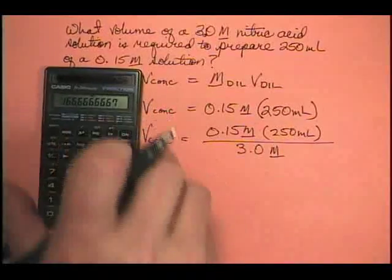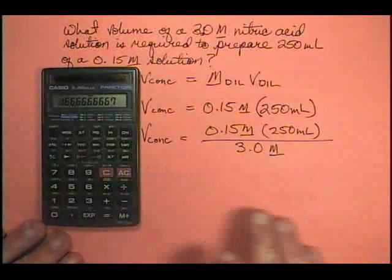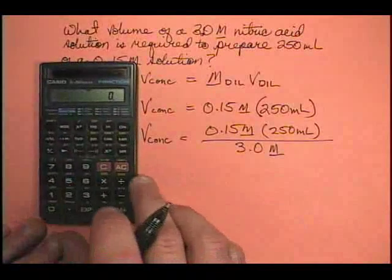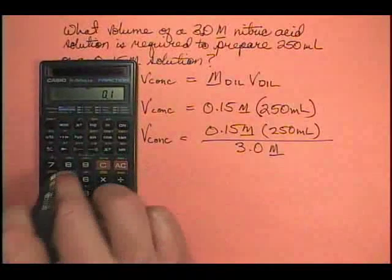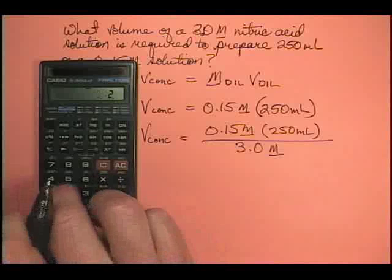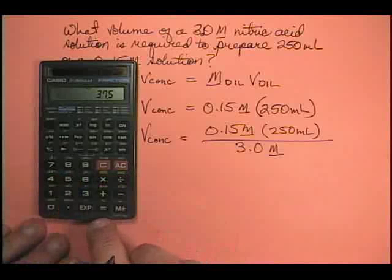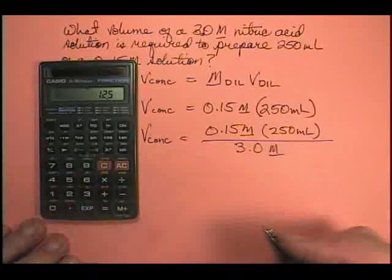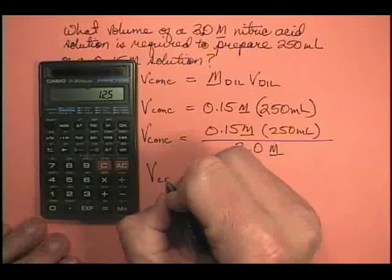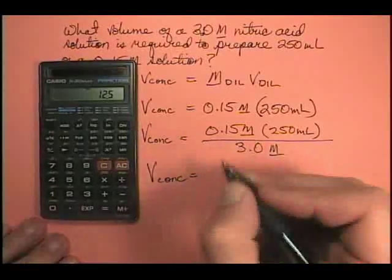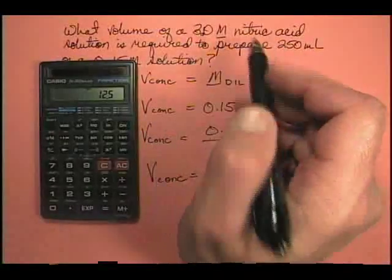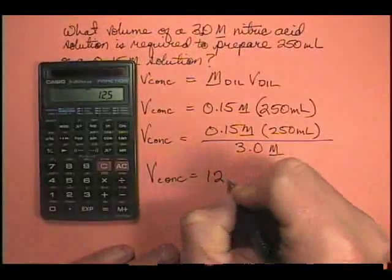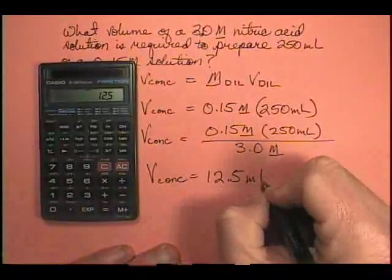So let's go ahead and chug through the calculation: 0.15 times 250 divided by 3.0 equals volume of the concentrate should be something less than 250 and it's 12.5 milliliters.